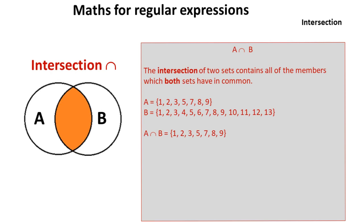With intersection, represented by this symbol here, we look at the two sets, and we only look at the members which both sets have in common. So here we have set A, here we have set B.